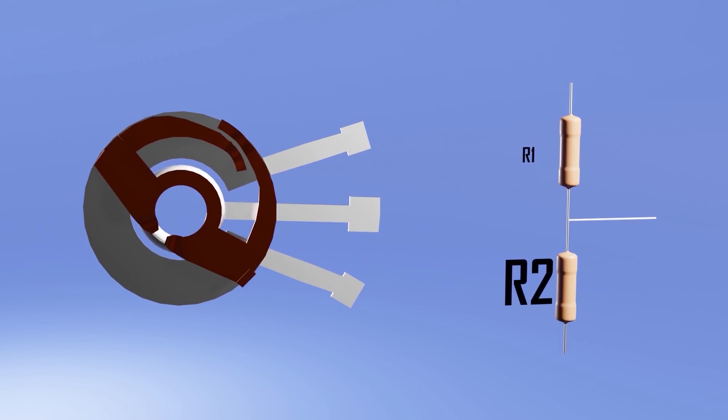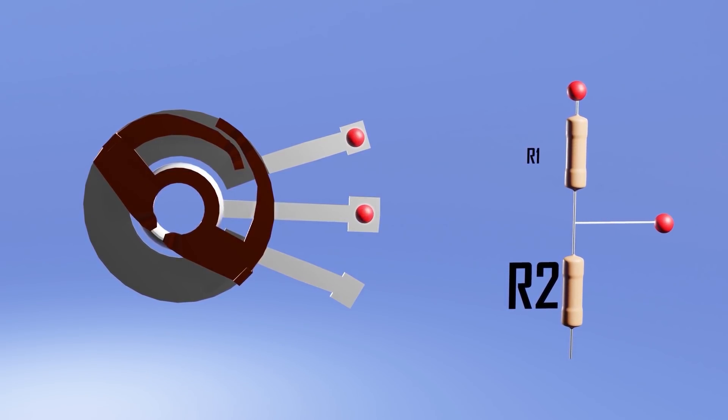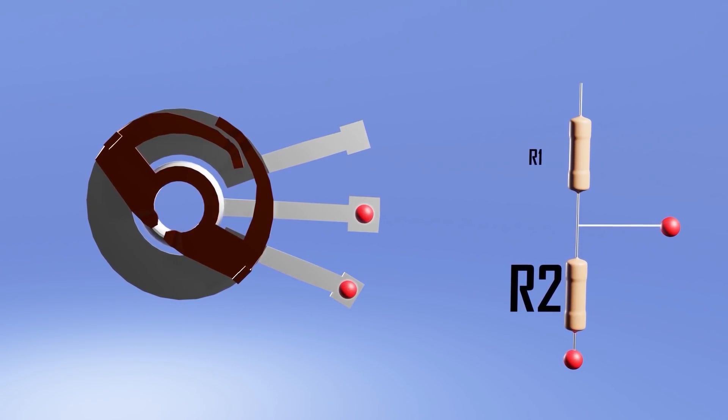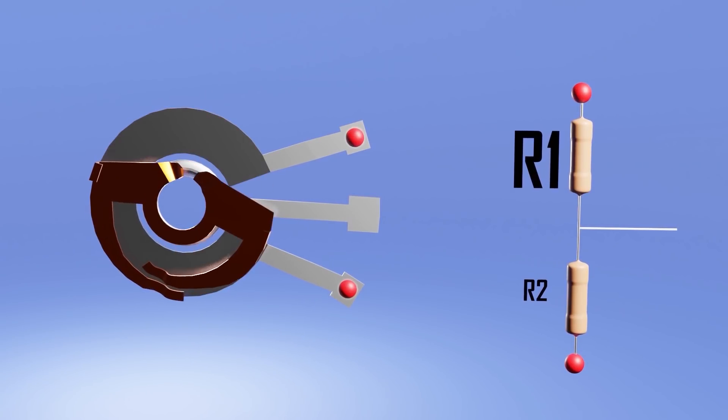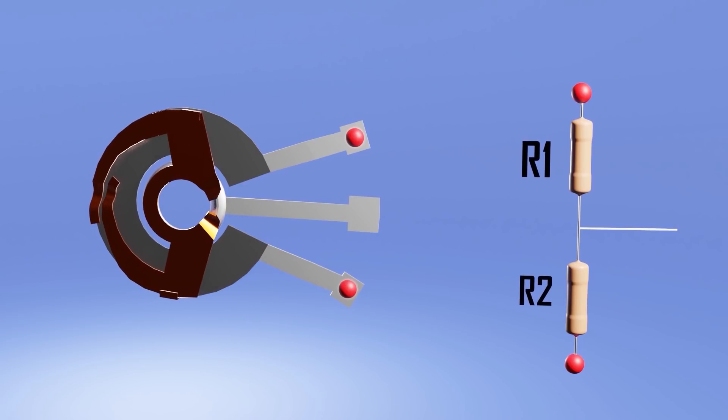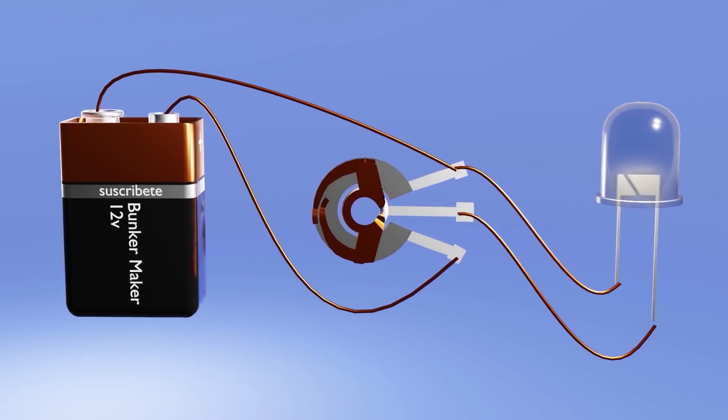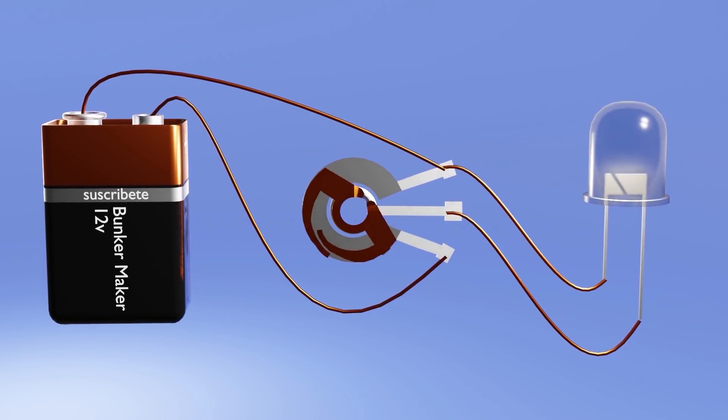In this way, if we measure the resistance between the first terminal and the intermediate one, we will obtain a value. Whereas if we measure the third terminal and the intermediate, we will obtain another value. However, by measuring the resistance between the first terminal and the last, this will always be the same, since they are in series. This feature allows us to generate circuits like this, in which when changing the potentiometer we vary the voltage that passes through the LED.